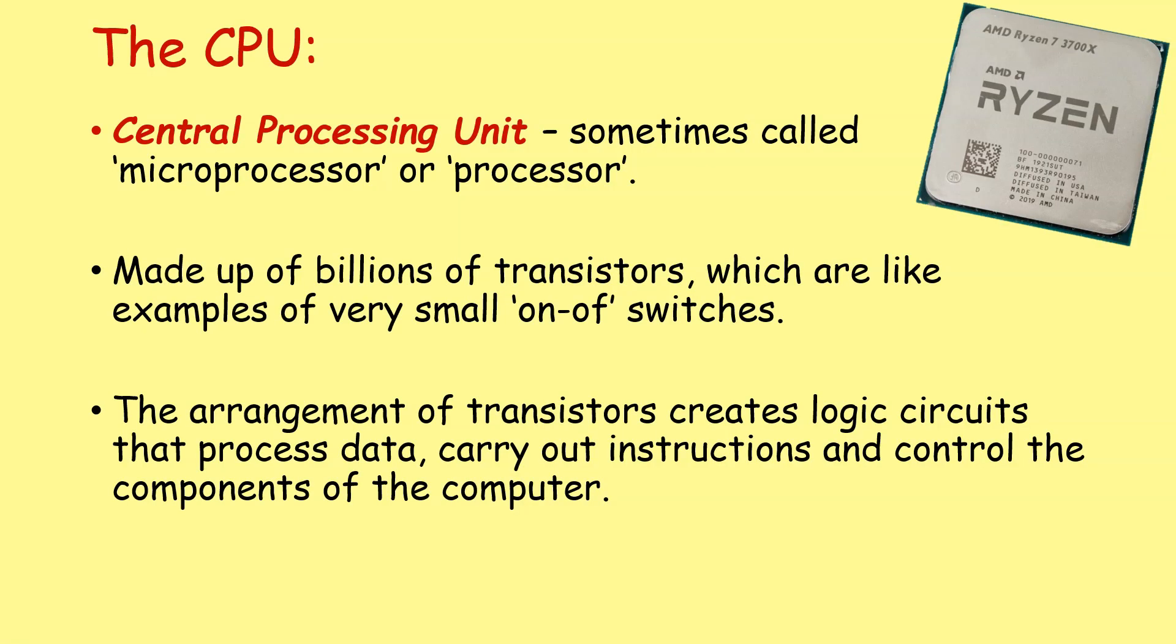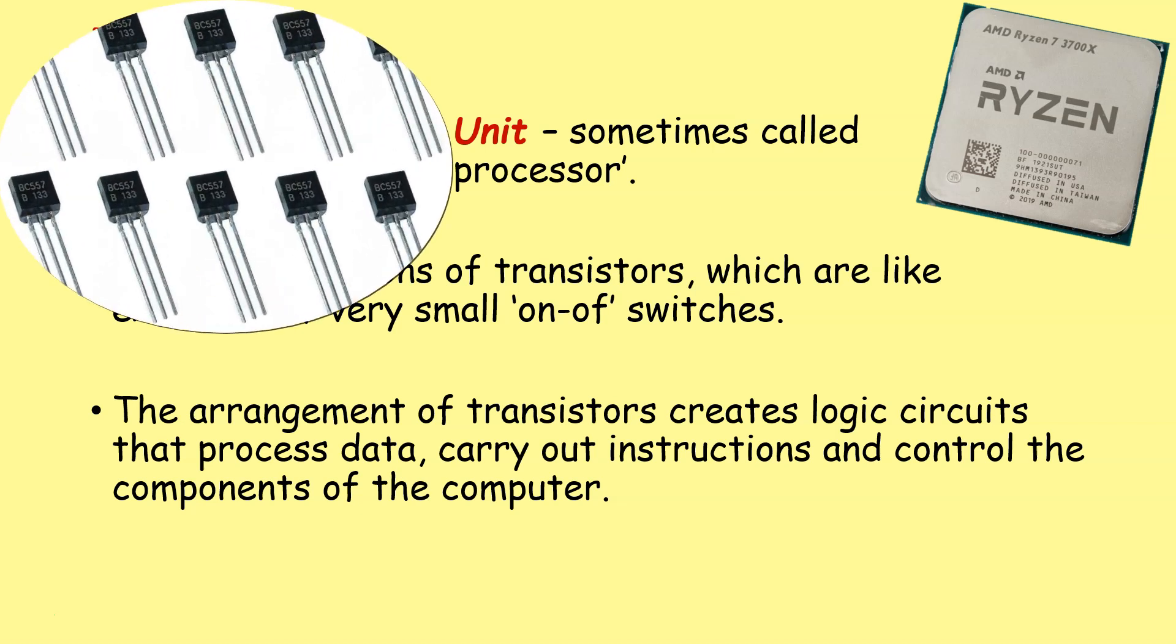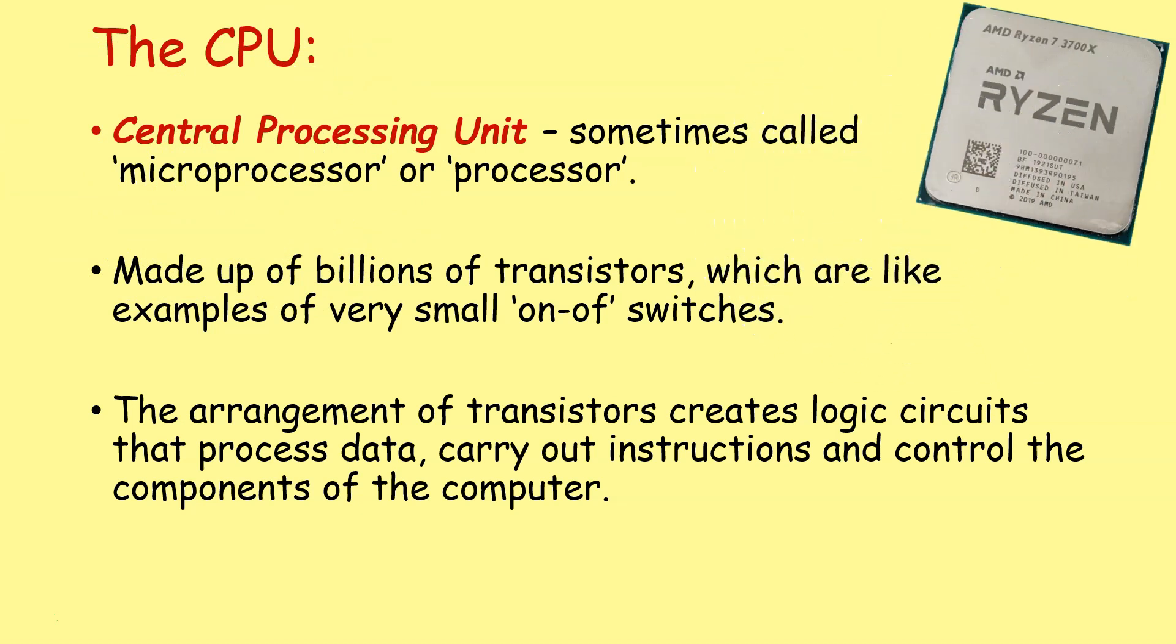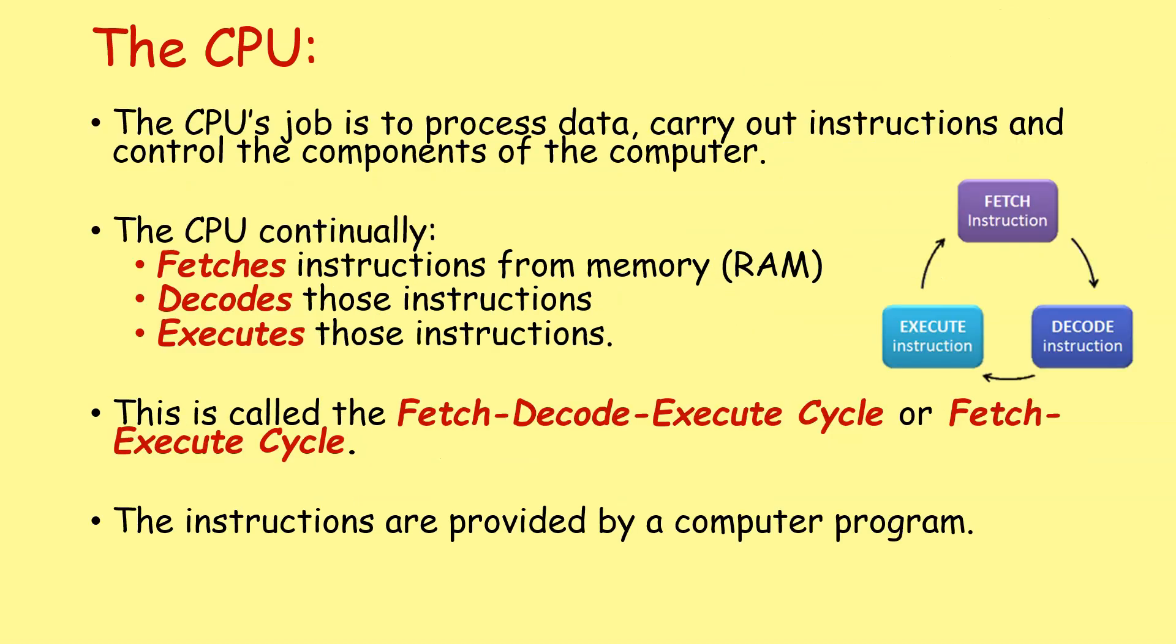So the CPU, or the central processing unit, is sometimes referred to as the microprocessor or the processor, but all these terms basically mean the same thing. It's made up of billions of transistors which are like very, very small on-off switches. And the arrangement of these transistors creates logic circuits that can process data, carry out instructions, and control the components of the computer. So while it's operating and carrying out billions of operations per second, essentially the computer is doing the following three things.